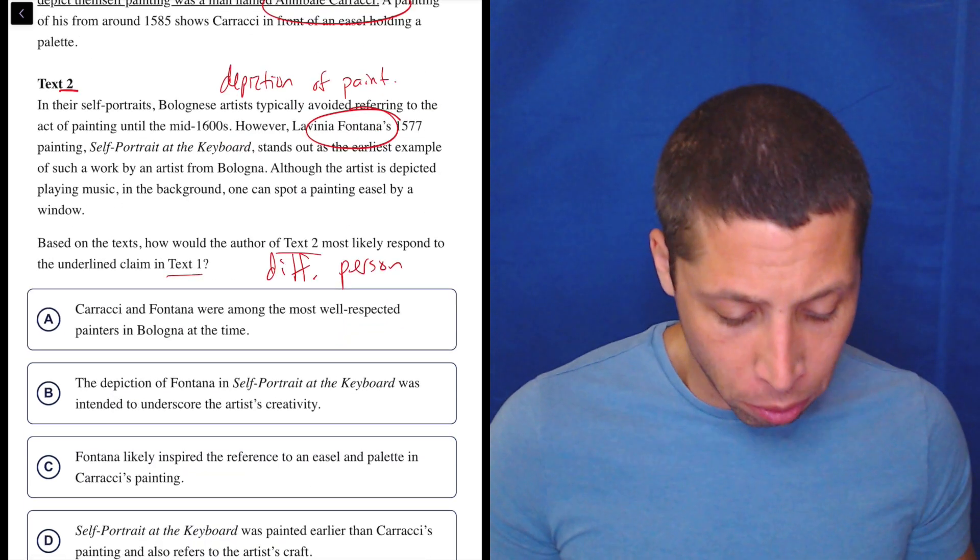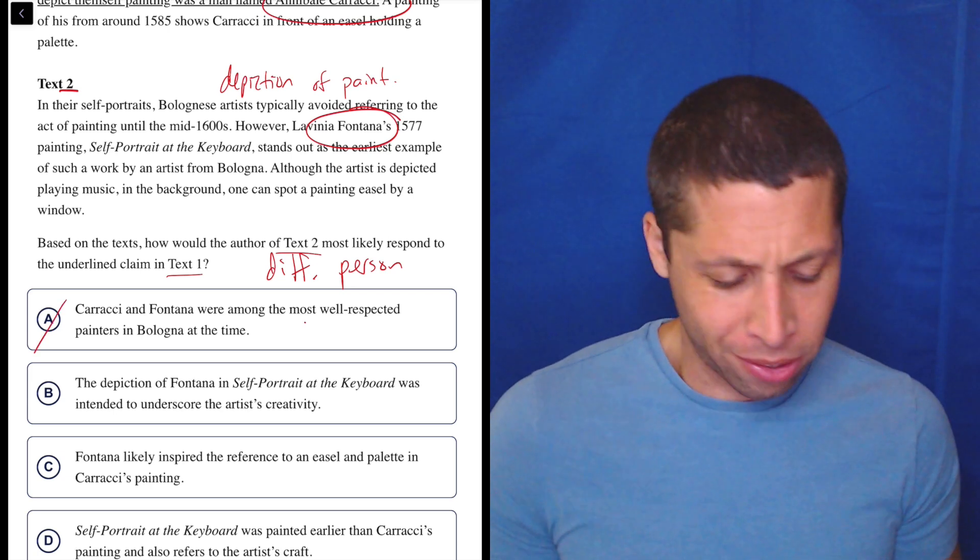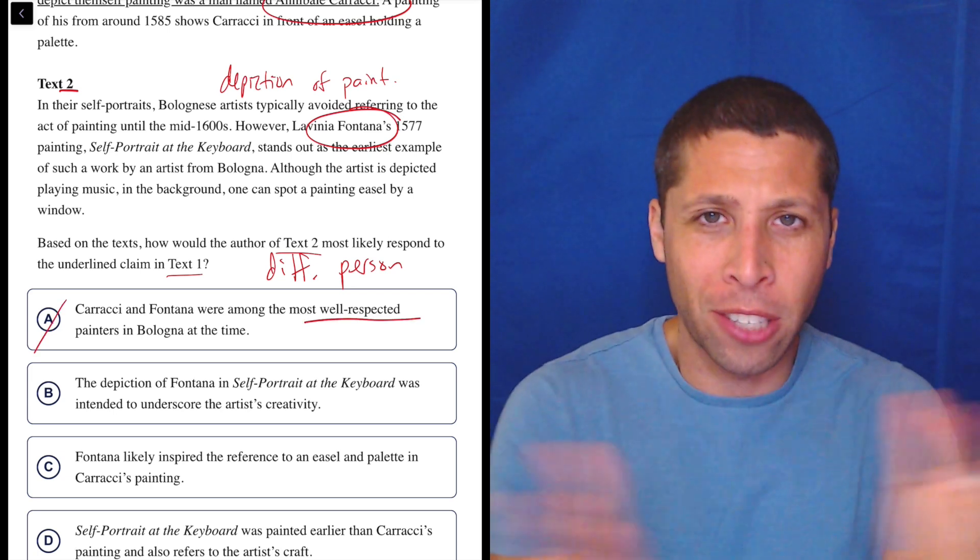A, Karachi and Fontana were among the most well-respected painters in Bologna at the time. No, who cares? Who cares what people thought of them, right? They're different people.